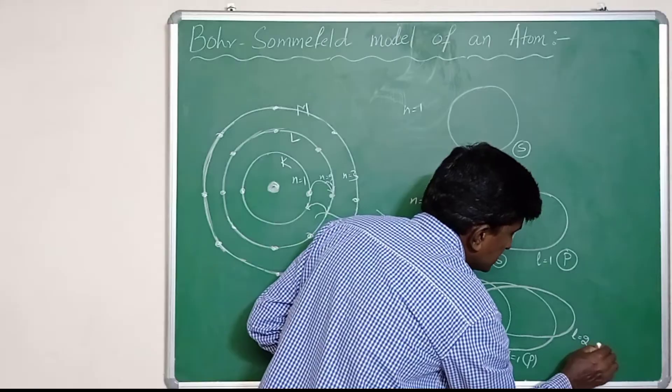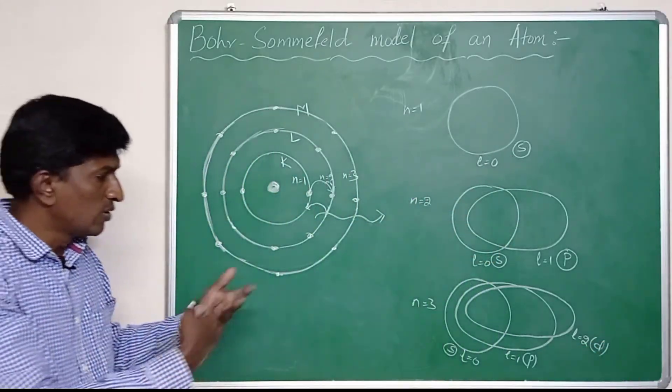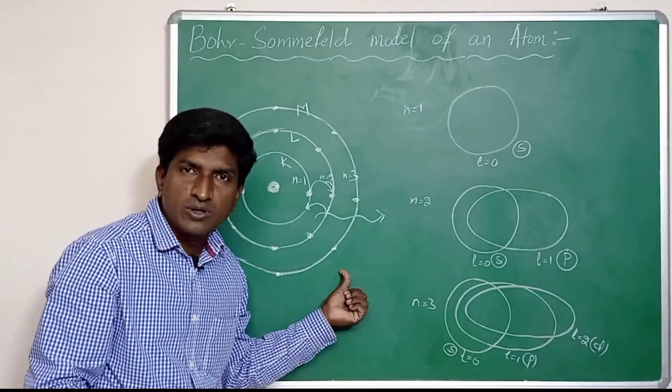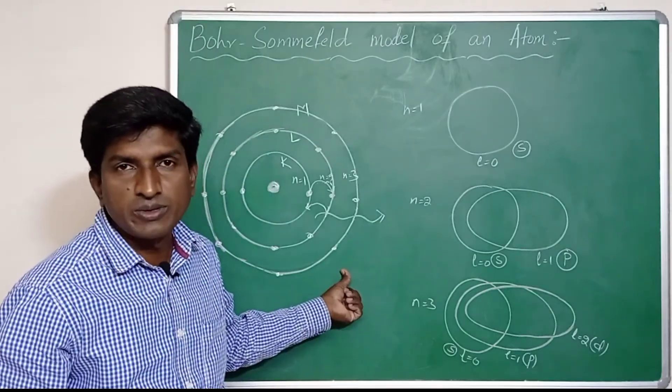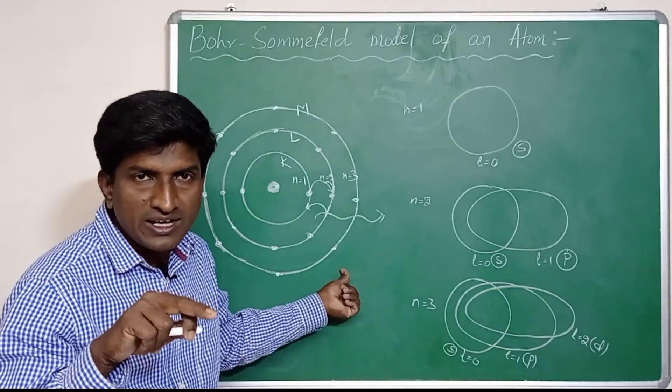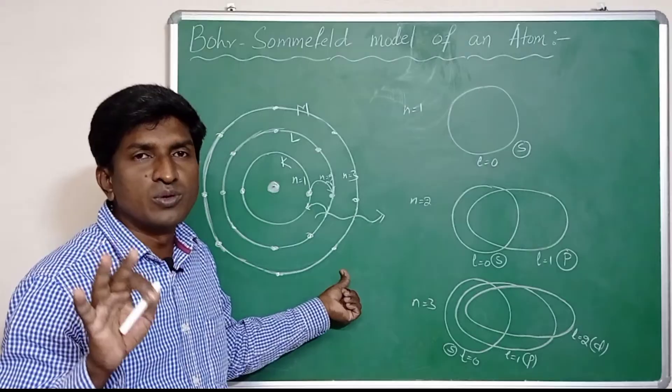In this way, if we go for the fourth Bohr's orbit, then Sommerfeld added three elliptical orbits. The first one is circular and three are elliptical, so the fourth Bohr's orbit splits into four finer lines.